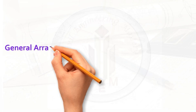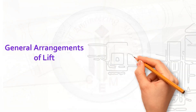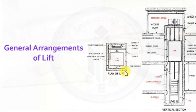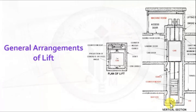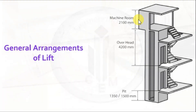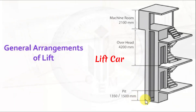First, let's start off with the general arrangements of lift. Here we have the plan of the lift. In section, we have three parts. On the top of the lift, we have the lift machine room; in the middle, the lift car will be running through floor to floor; and at the bottom, we have the lift pit.